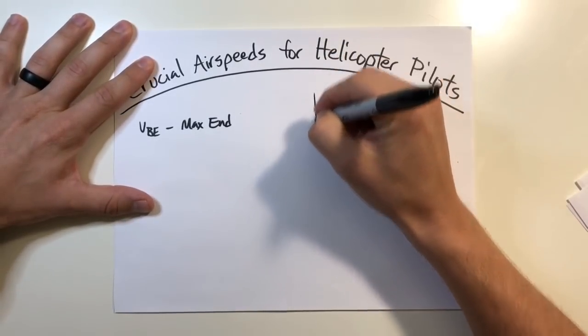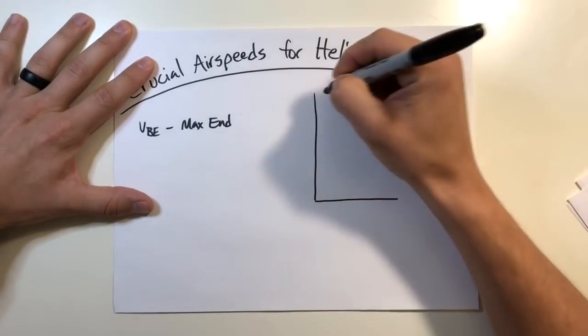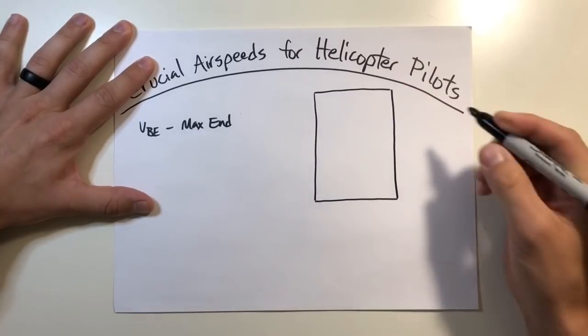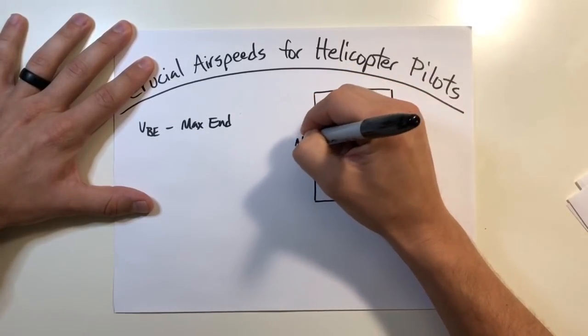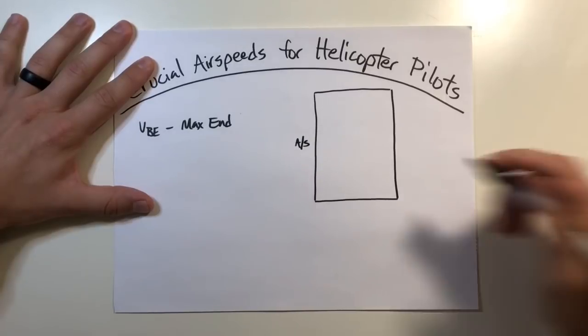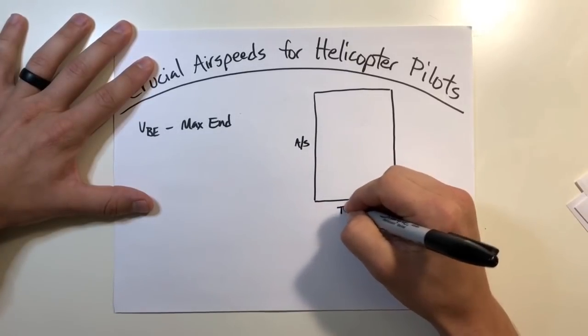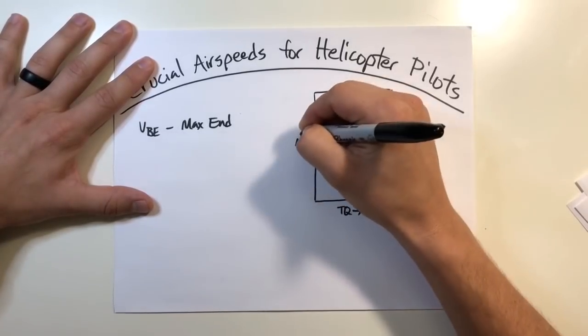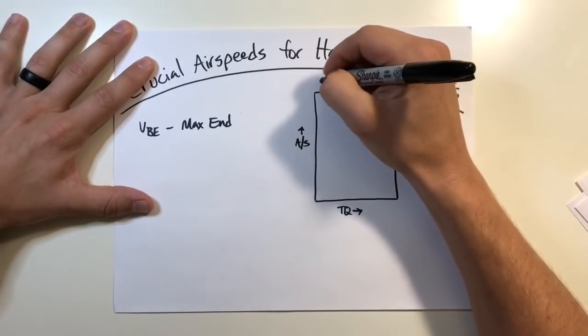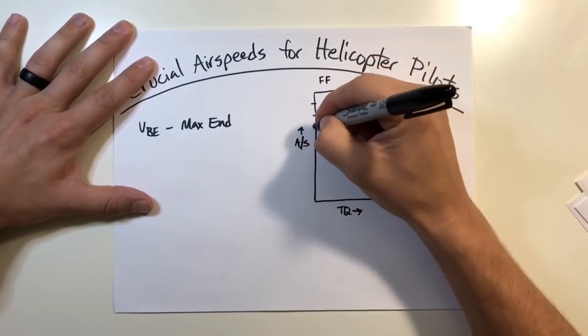So if you remember from your cruise charts in every operator's manual, they should have something in here that outlines this for you. On one side, you're going to have your airspeed. On the bottom side, you're going to have your torque generally increasing in these directions. And at the top, generally you'll have your fuel flow.